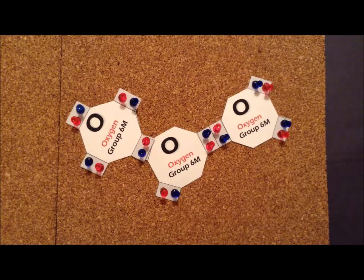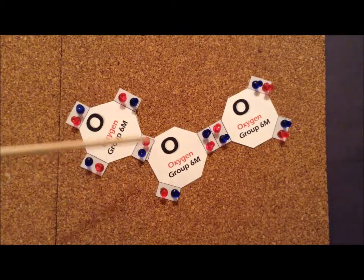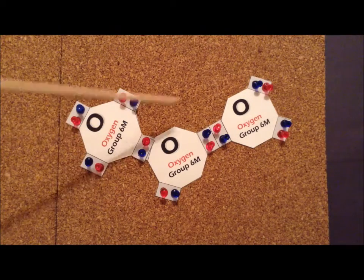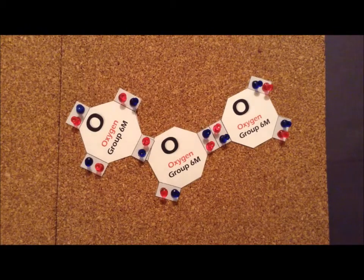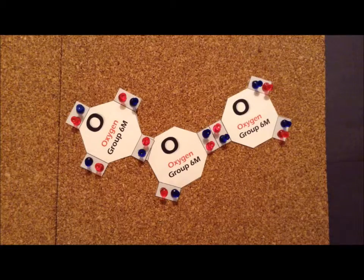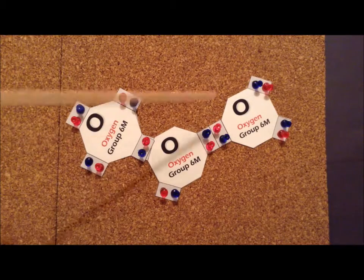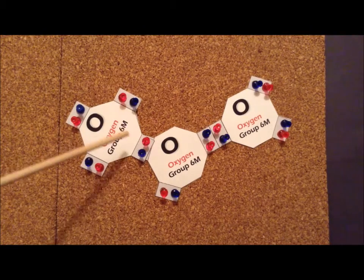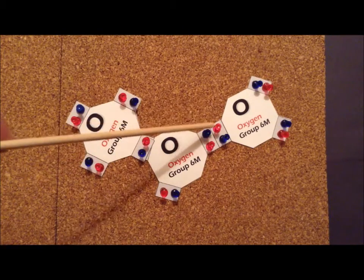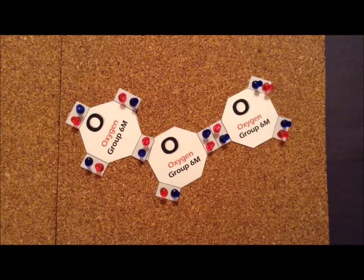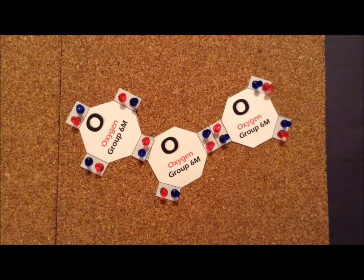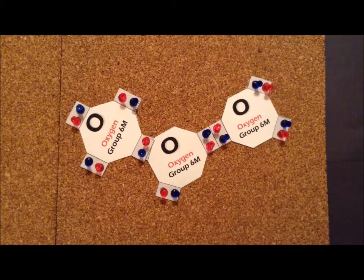Ozone actually exists as this kind of structure where we can think of it as one single bond here and a double bond there. But we have to keep in mind that by the theory of resonance, whenever we can draw two different valid structures, one with a single bond here and a double bond there, or with a single bond over here and a double bond over there, neither one of those structures is the correct structure.